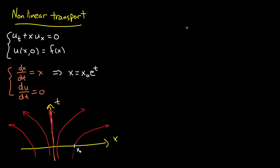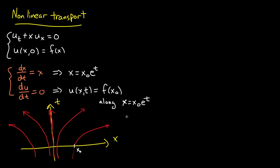Since du/dt equals 0, u doesn't change along the characteristic curves. So u(x, t) equals f(x0), along the characteristic curve x equals x0 times e to the t. As usual, we can eliminate the reference to x0 by using x0 equals x over e to the t. So u(x, t) equals f(x over e to the t). What this means is: for any point (x, t) in the plane, evaluating x over e to the t gives us x0 — the point where the characteristic line through (x, t) hits the x-axis — and that gives us the value we need.